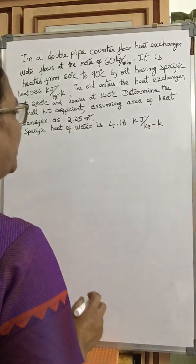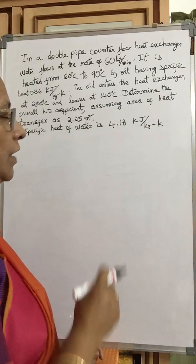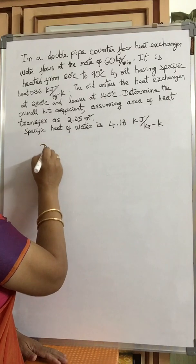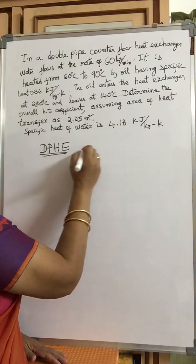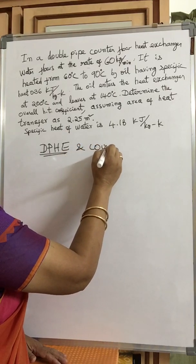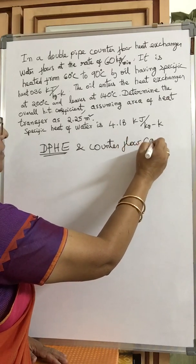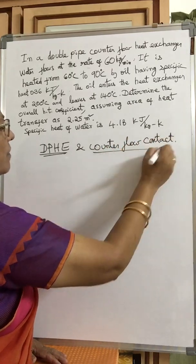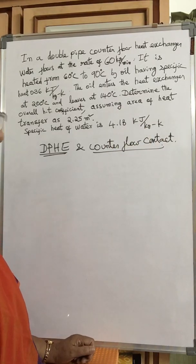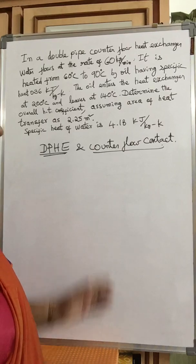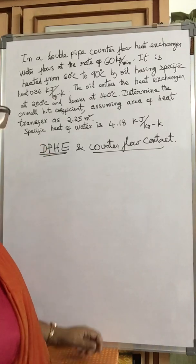Determine the overall heat transfer coefficient, assuming area of heat transfer as 2.25 meter square. Specific heat of water is 4.18 kilojoules per kg per Kelvin. So this is a double pipe heat exchanger with counter flow contact. We need to find out the overall heat transfer coefficient.